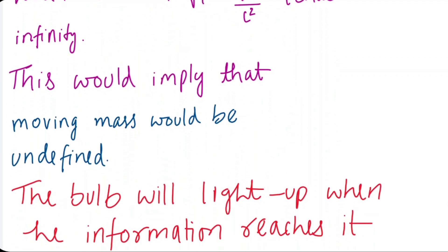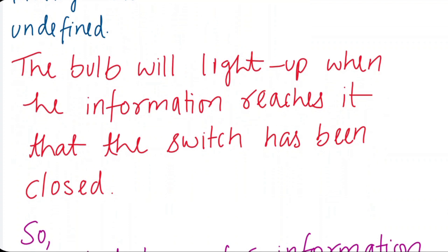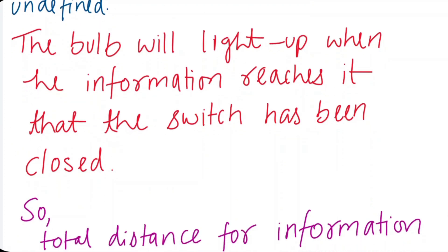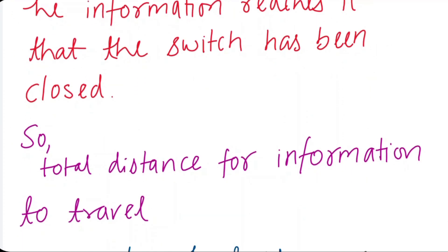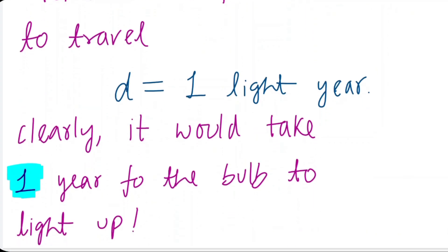Okay, now, the bulb will light up when the information reaches it that the switch has been closed. So, the total distance for information to travel is 1 light year. If you carefully see, the bulb is 1 light year far from the switch.